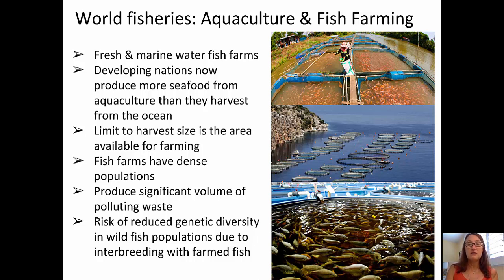Developing nations now produce more seafood from aquaculture than they harvest from the oceans — that's a good sign. The limit to harvest size is the available area for farming. But fish farms have very dense populations and can produce significant volumes of polluting wastes. They may also contribute to reduced genetic diversity in wild fish populations.